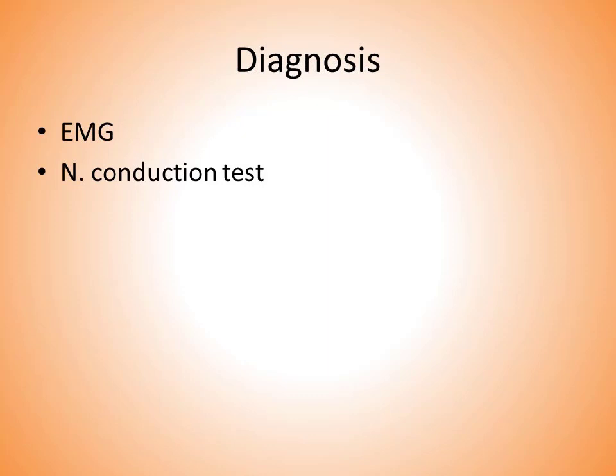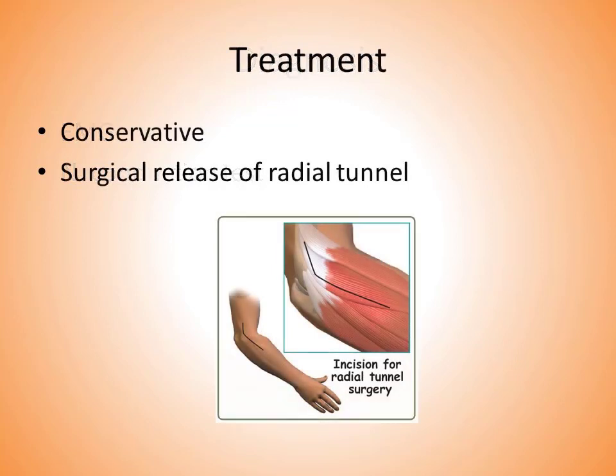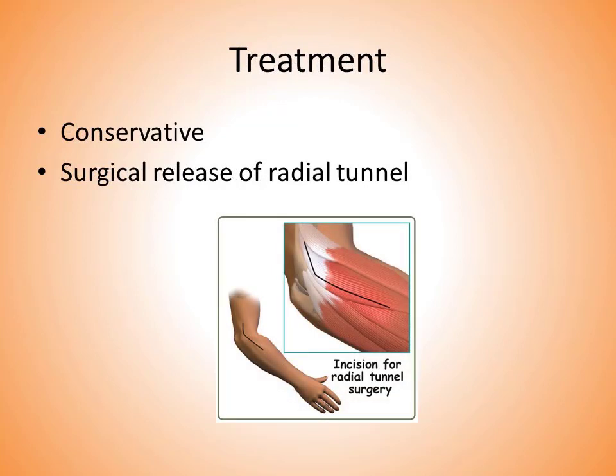Diagnosis is performed through an EMG or a nerve conduction test. During conservative treatment, anti-inflammatories and brace splinting will be used. However, if that does not work, a surgical release of the radial tunnel may be performed.